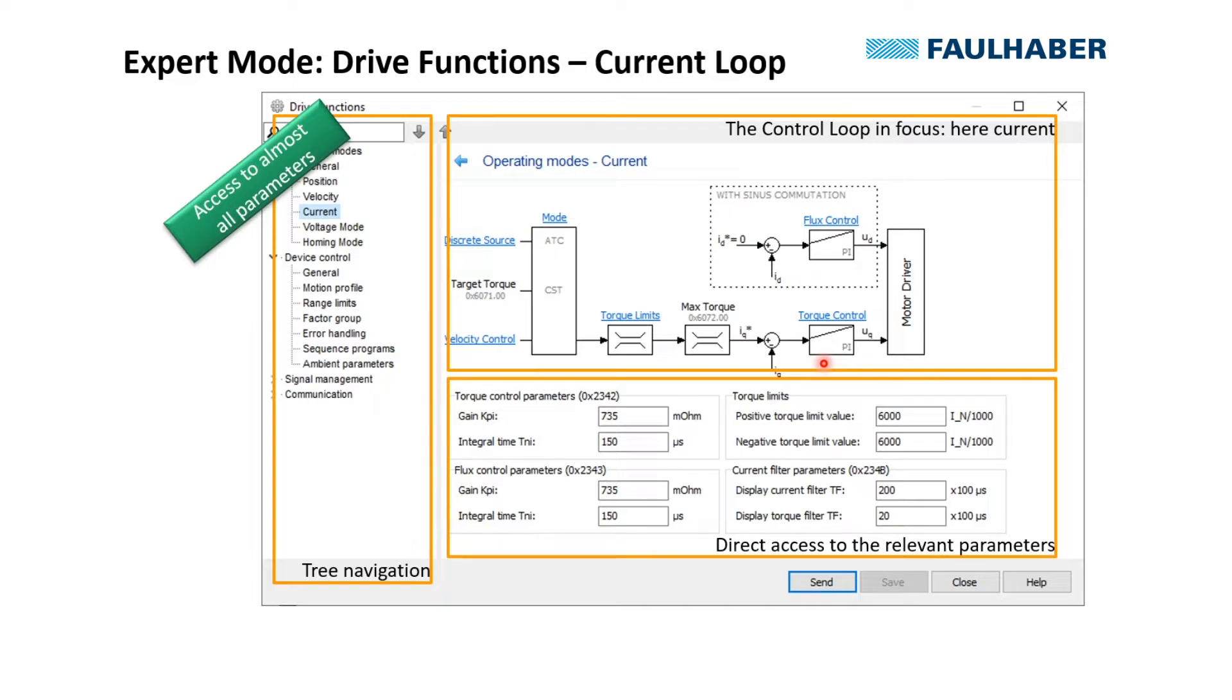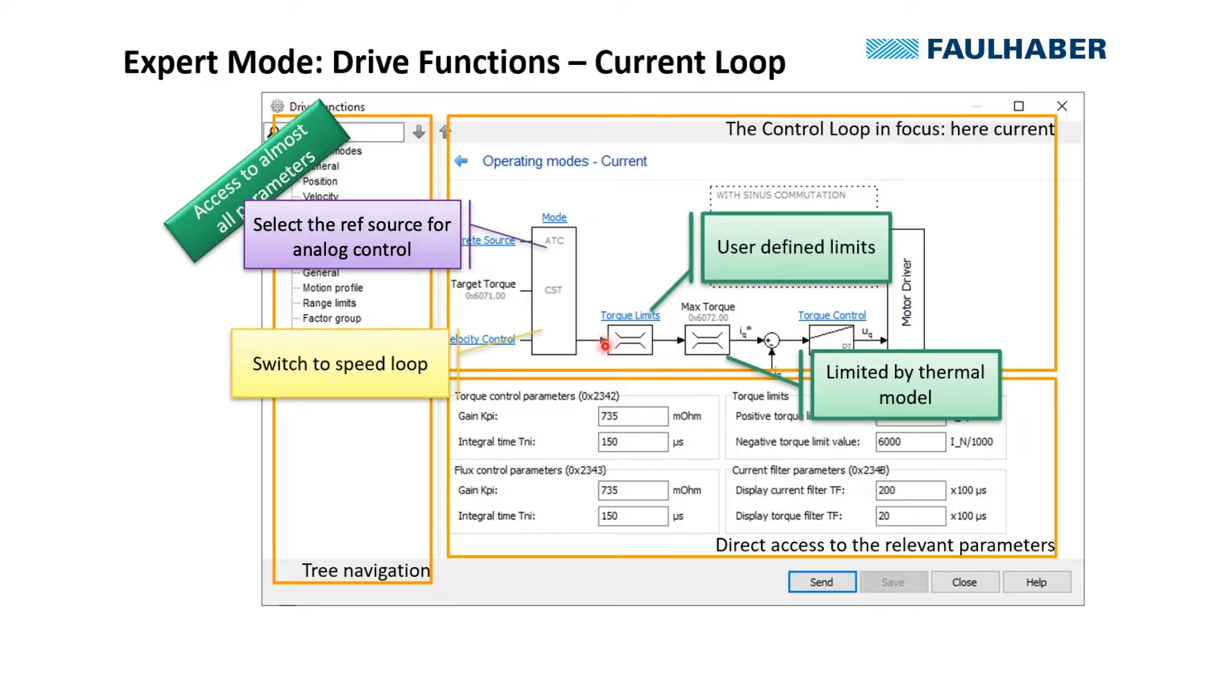The loop parameters here are displayed but we usually don't have to change them. They are preset by the selected motor, but what we could do is change the torque limits down here for whatever torque you can allow in your application.